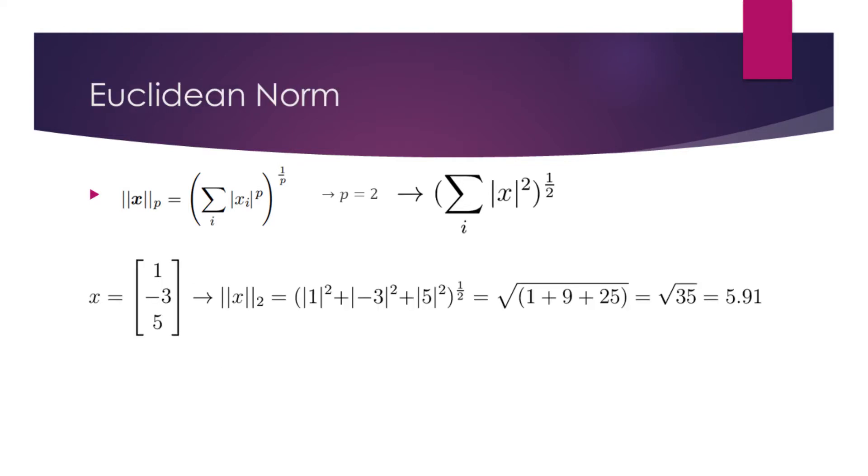We obtain the Euclidean norm by substituting p with 2. On an intuitive level, the resulting formula implies to sum the squared values of all elements and take the square root.